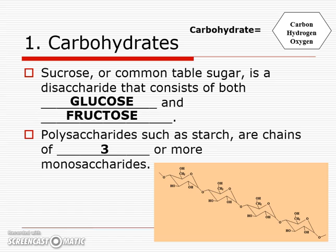If you put more than two together — three or more long chains of carbohydrates like starches and breads — those are called polysaccharides: poly meaning many, so three or more monosaccharides. Notice the picture below is a long chain of monosaccharides called a polysaccharide. In the right-hand corner, I show a symbol for carbohydrate — that symbol is carbon, hydrogen, and oxygen. They're usually a five-sided shape.